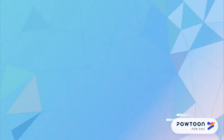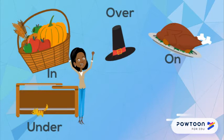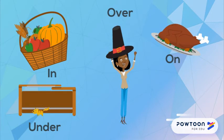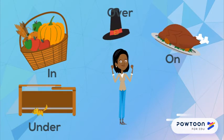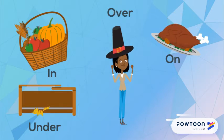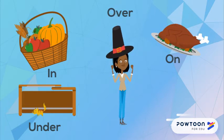Let's continue to look at prepositions. Prepositions are linking words. They link parts of a phrase. Examples of prepositions are: in, under, over, on.